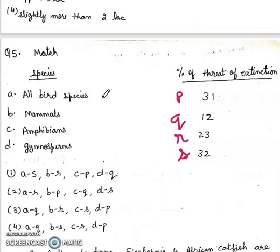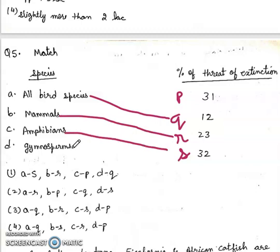Birds 12%, mammals 23%, amphibians 32%, gymnosperms 31%. So right answer will be third.